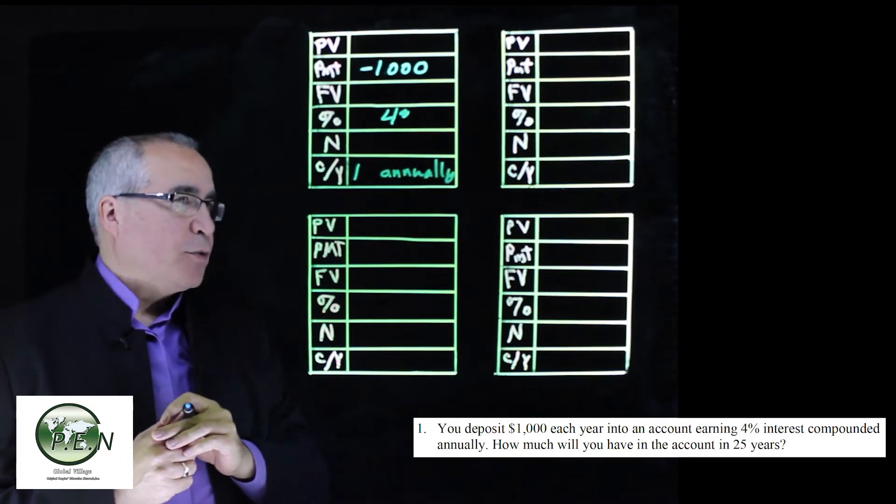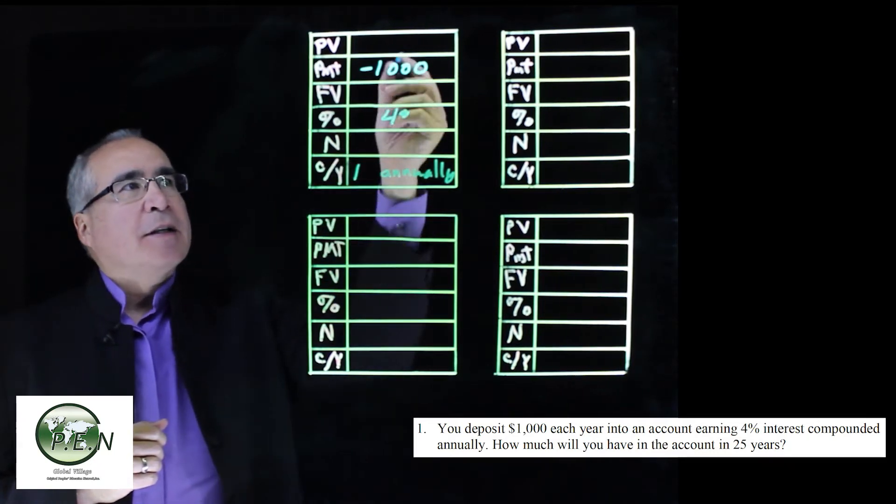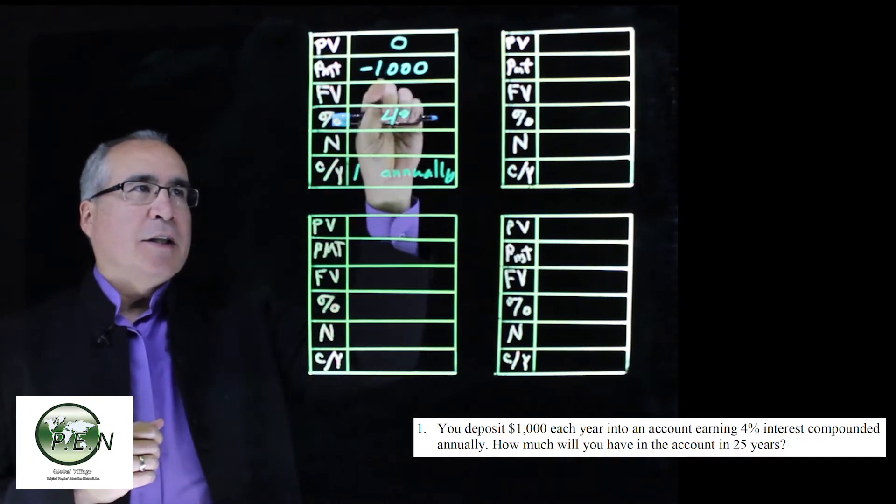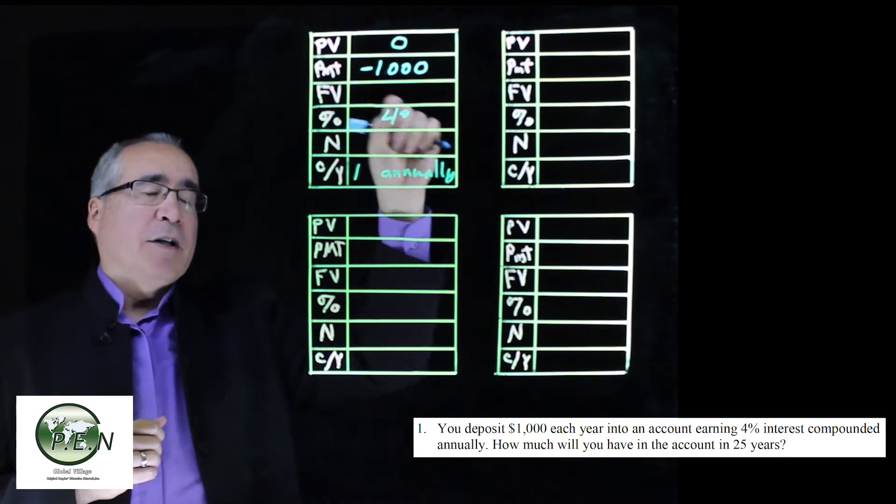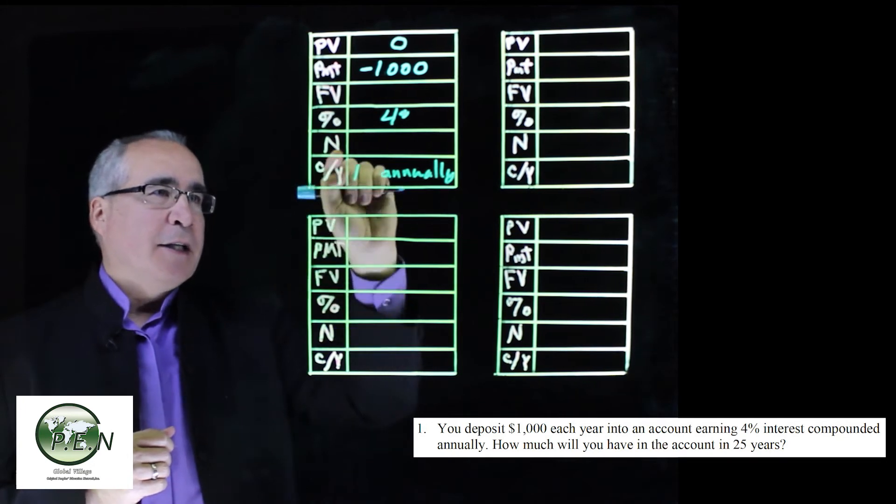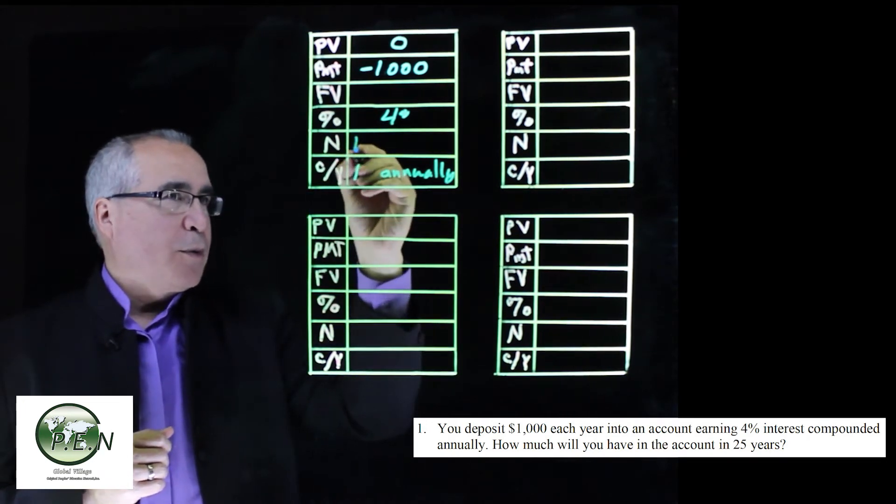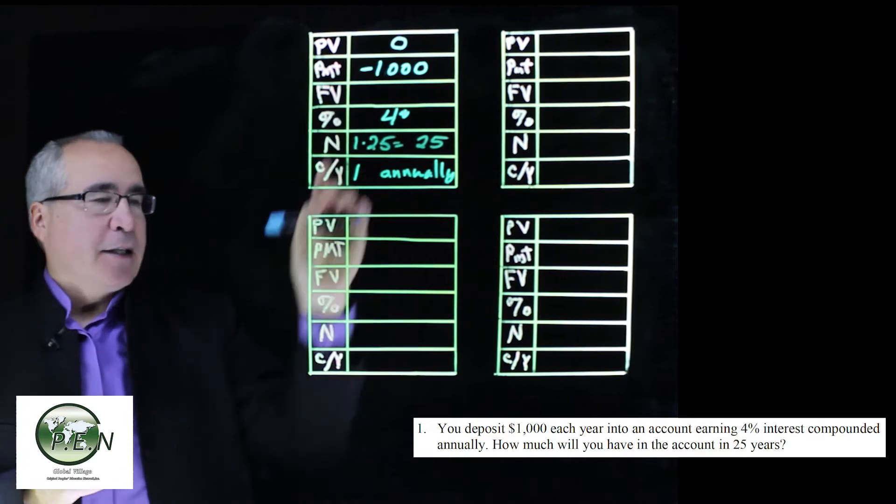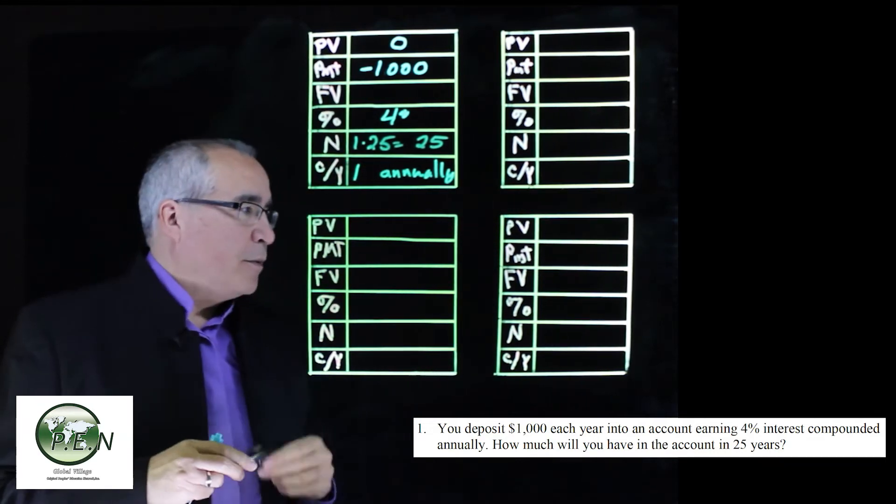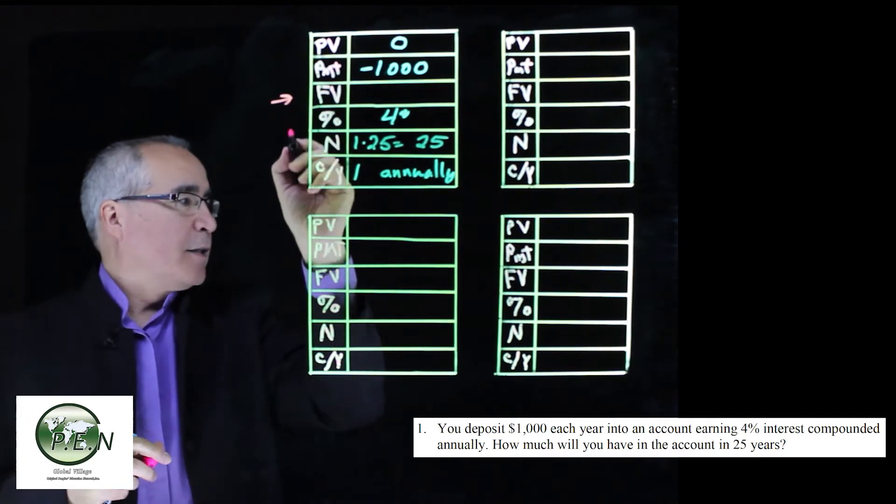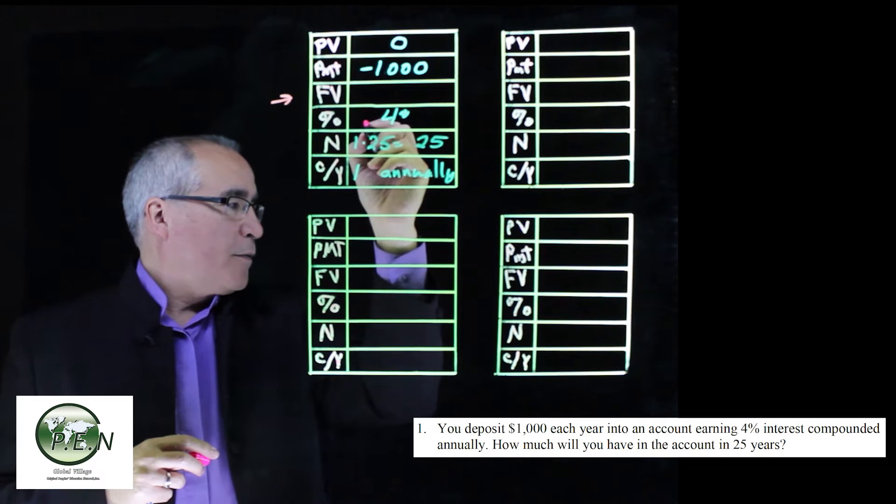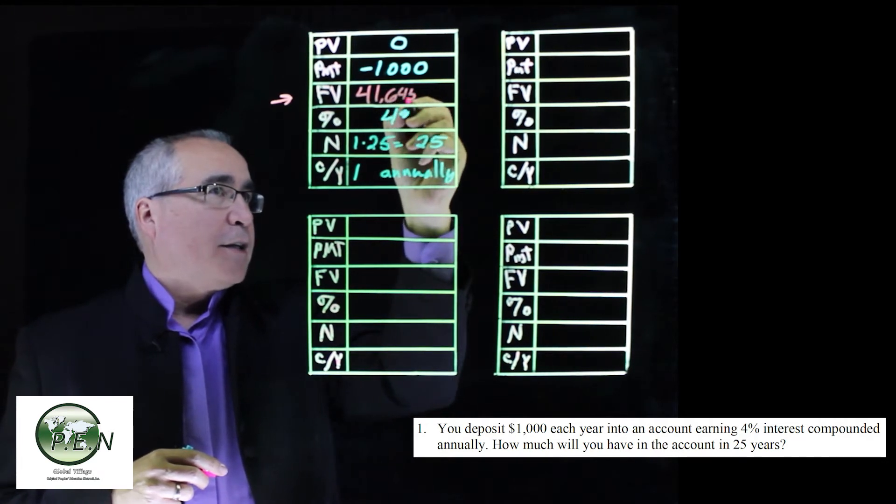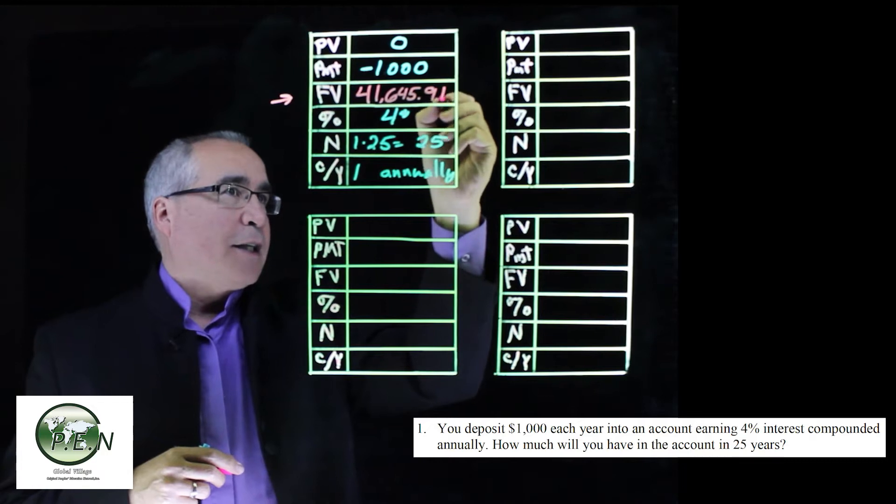25 years. The thing that's missing, sometimes you have to put this in, sometimes you don't, is that there was no initial deposit in addition to the $1,000 per year. We're going to calculate the future value. The number of periods is one times the number of years, so we just put 25 in here. Click on the future value button and we arrive at $41,645.91.